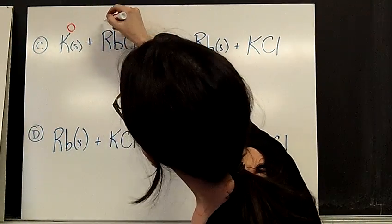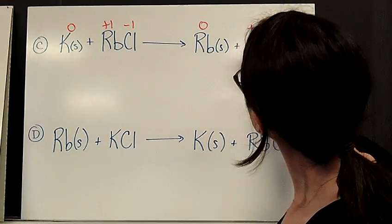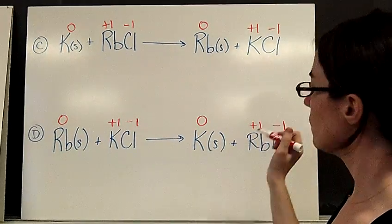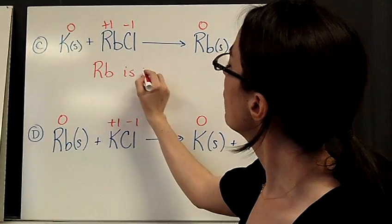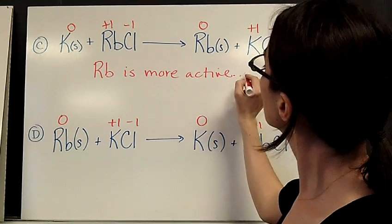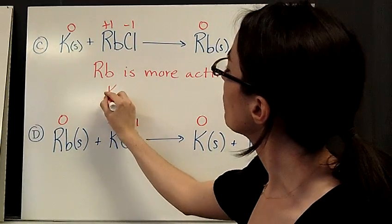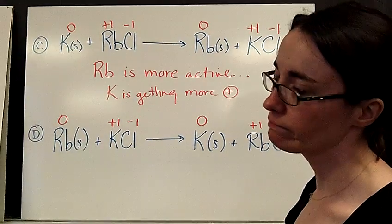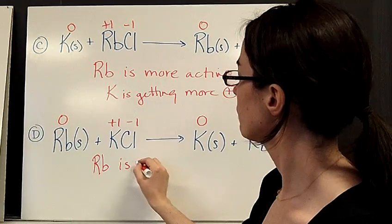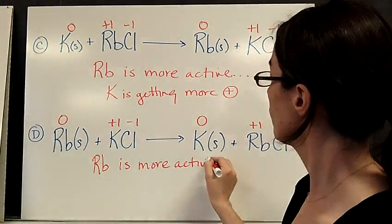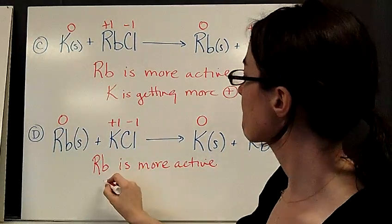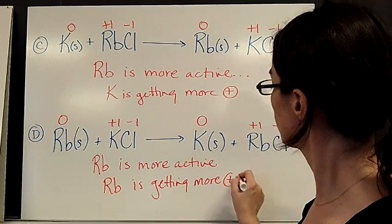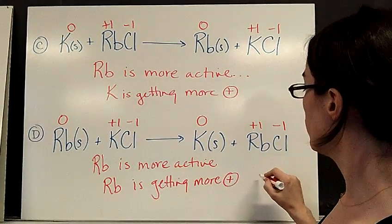Assigning oxidation states: Rb is 0, K is +1, Cl is −1 on each side. Now, we said rubidium is more active, but looking at the first reaction — K + RbCl — it is the K that's getting more positive. In the second reaction, the rubidium goes from 0 to +1. Since rubidium is more active and it's getting more positive, this reaction is spontaneous.